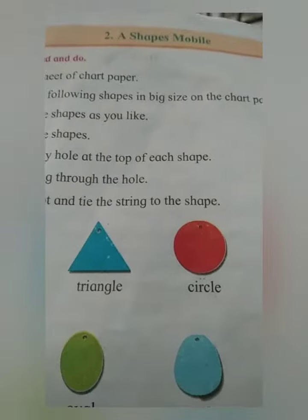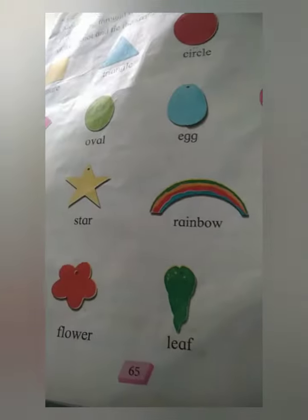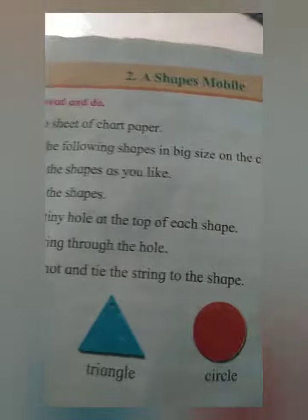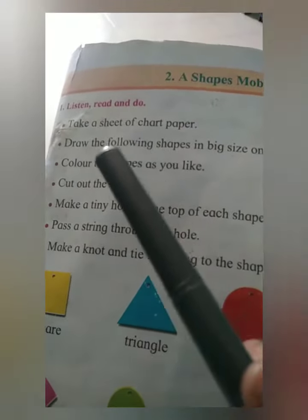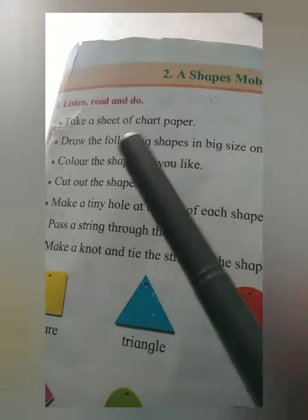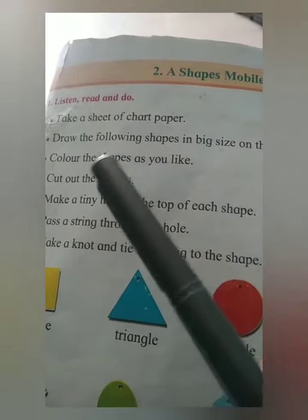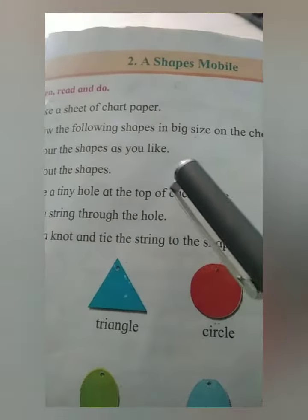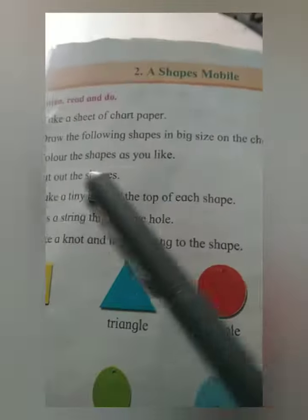First Standard English textbook, page number 65, Lesson A: Shapes Mobile. Listen, read and do. Take a sheet of chart paper and draw the following shapes in big size on the chart paper.